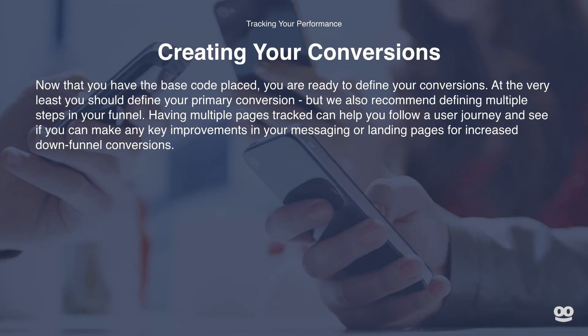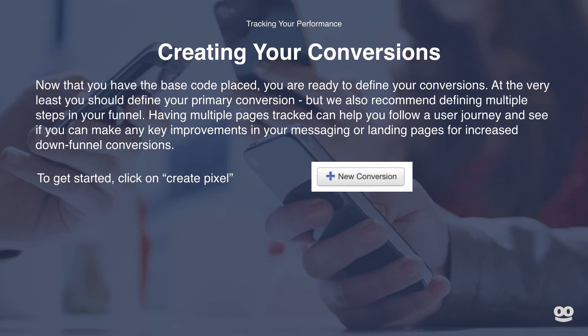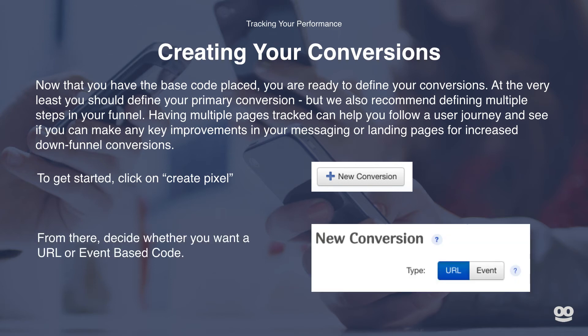Now that you have your base code placed, you are ready to define your conversions. At the very least, you should define your primary conversion, but we also recommend defining multiple steps in your funnel. Having multiple pages tracked can help you follow a user's journey and see if you can make any key improvements in your messaging or landing pages for increased down-funnel conversions. To get started, simply click on Create Pixel from the conversions page, then decide whether you want to create a URL or event-based code.